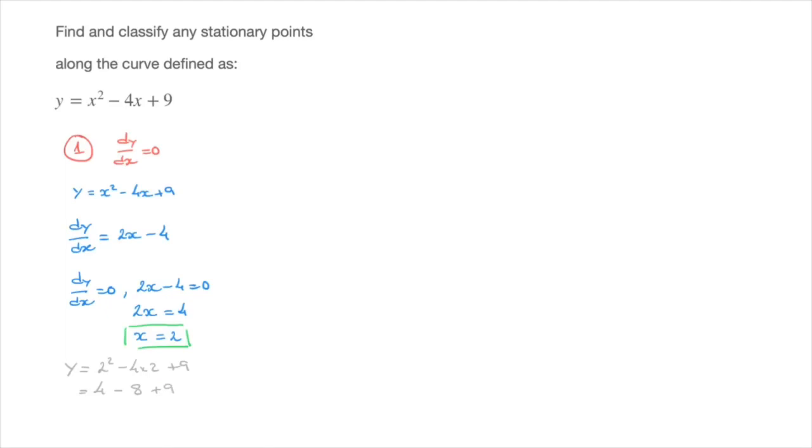And calculating this from left to right, that's 4 minus 8, which is negative 4, plus 9, which is 5. So y is equal to 5. And we can now state that the stationary point has coordinates (2, 5). And I'll go ahead and box that first result.